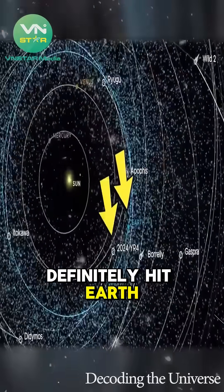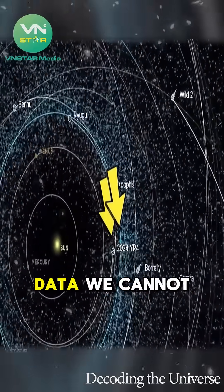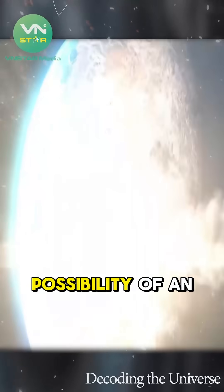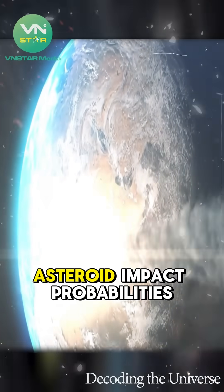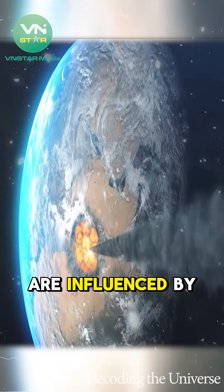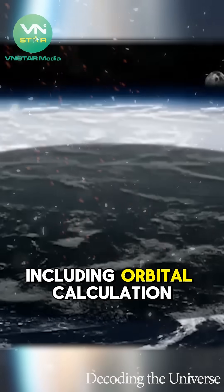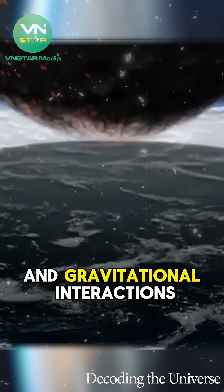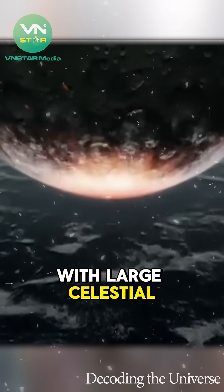Will the asteroid definitely hit Earth? Based on current data, we cannot rule out the possibility of an impact. Asteroid impact probabilities are influenced by many factors, including orbital calculation errors and gravitational interactions with large celestial bodies.